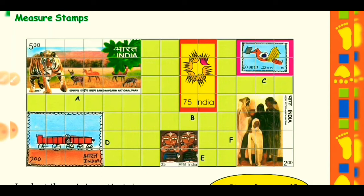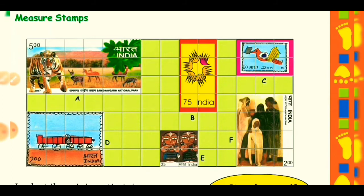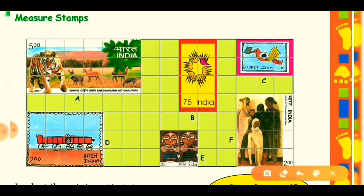Here you can see six Indian stamp tickets. I want to ask you: from where do you all buy the stamp tickets? Write your answer in the comment section. Now, in your previous class - Class 4 - you studied about stamp tickets and found their values. Let's take your previous knowledge. Here is stamp A. Its value is written as 500, which means 500 paise, or 5 rupees, because 500 paise makes 5 rupees.